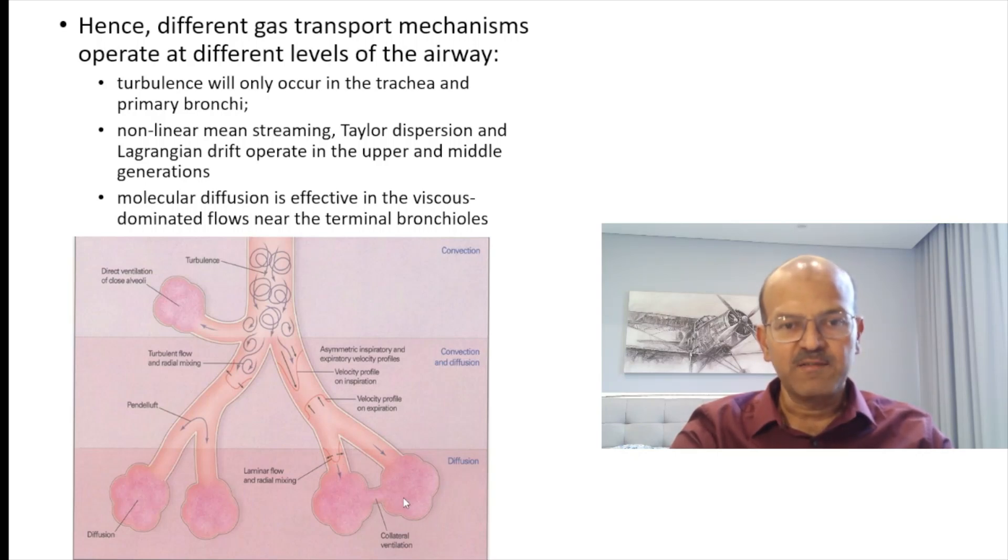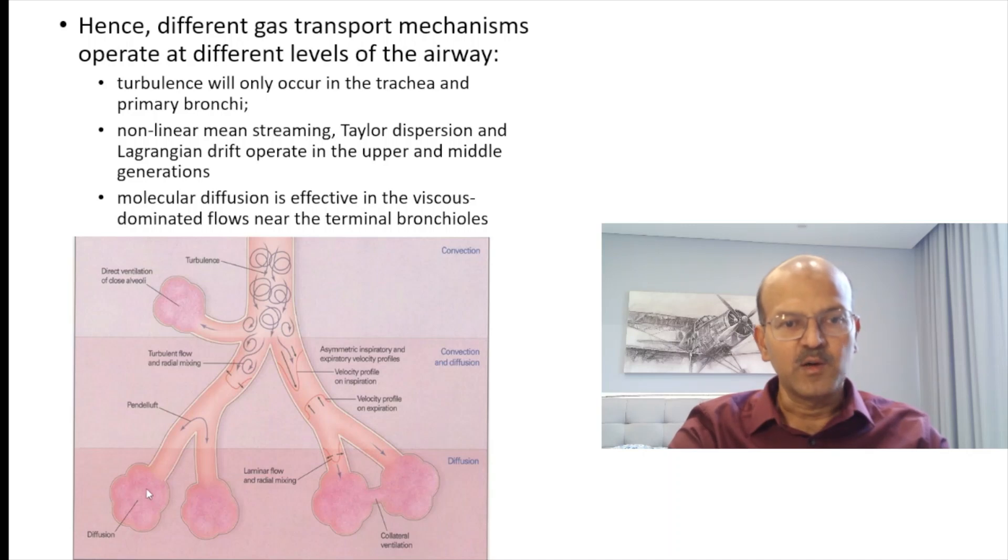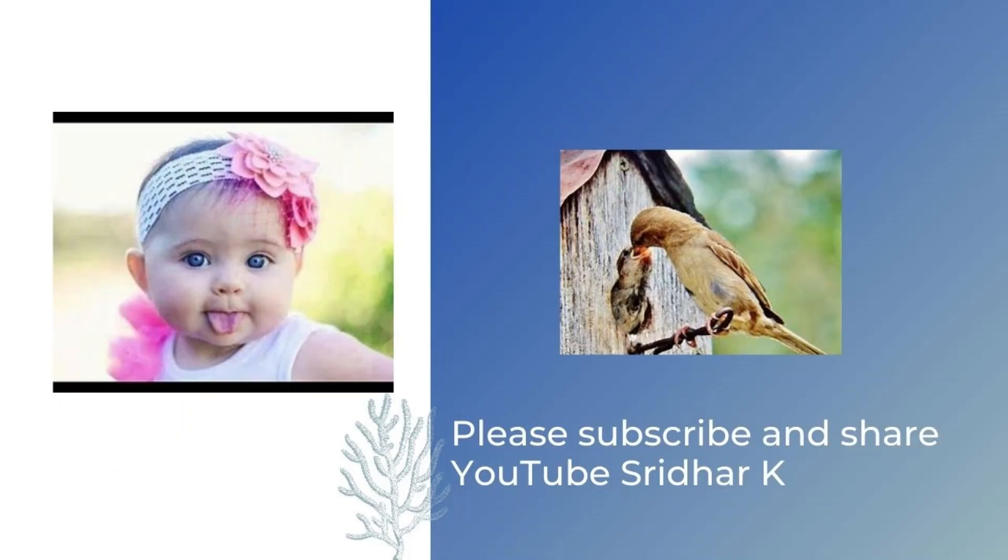You also have collateral ventilation between the alveoli, the pores of Kohn, and obviously the pendulift effect is illustrated here as well. Remember that each level of this interferes, and obviously if you have an obstruction in the airway or an atelectatic segment, it will affect gas exchange as well. So adequate lung recruitment, as much homogeneity as possible—it's not possible to be fully homogenous but it matters as well.